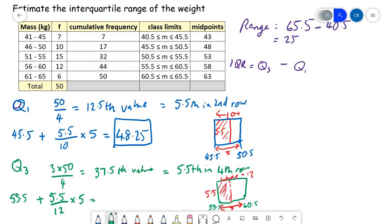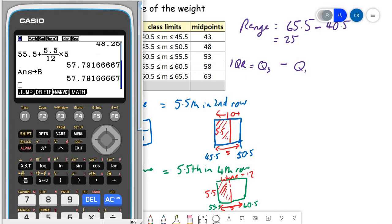So we do that on the calculator. I've done that one right. We get 57.8.